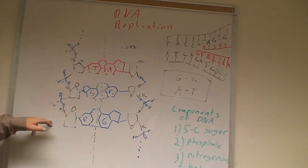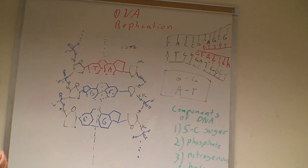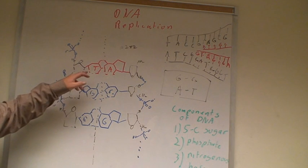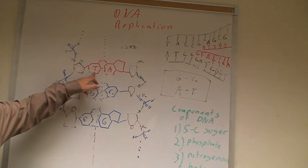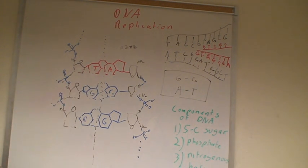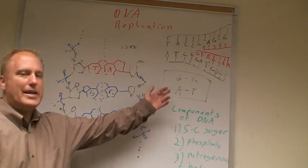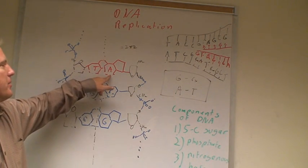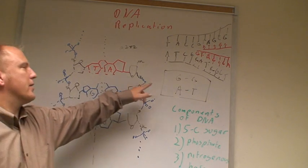The phosphate and the deoxyribose sugar will be easy to put in their correct places because they don't vary—there's only one kind of each.